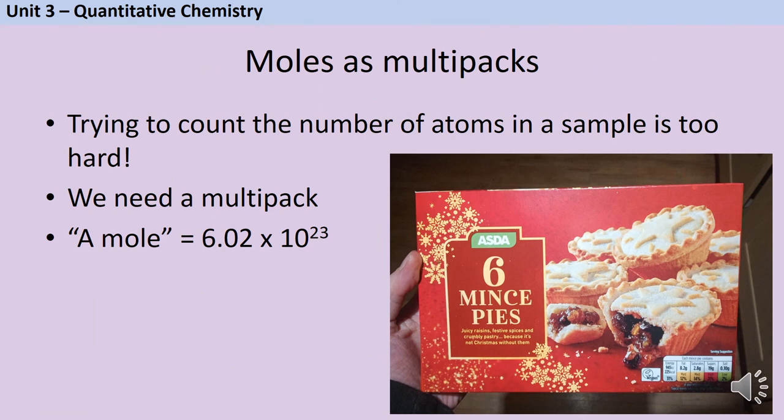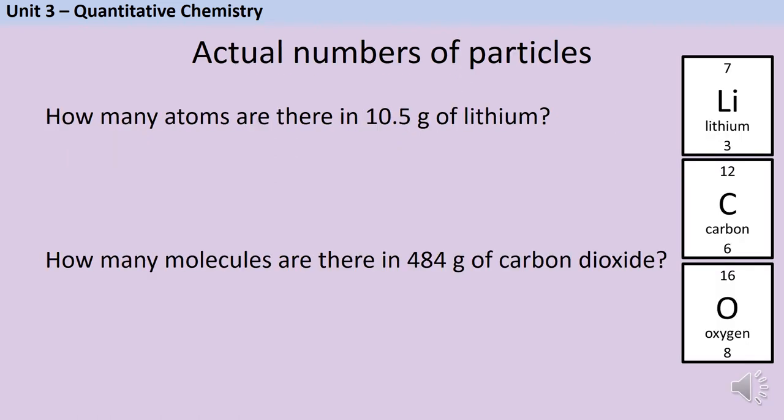Finally we're going to think back to our multipack. Occasionally the exam board are going to ask you not just how many moles there are in a particular sample but how many atoms that is or how many molecules that is. So now we need to go back to Avogadro's number. We've got two very similar questions here, one asking us about an element and one asking us about a compound. For both questions my first step is going to be to work out the number of moles. In pretty much every quantitative chemistry question that's the first thing you want to be doing.